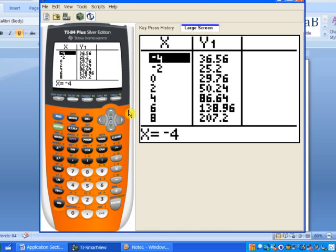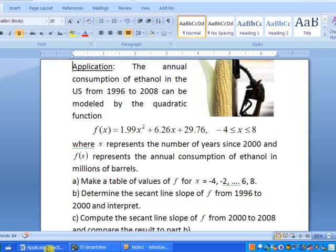It goes from negative 4 to 8 in increments of 2. Remember, x represents the number of years since 2000, so negative 4 represents the year 1996. We'll use those values as we go ahead and start to compute our secant line equations. Let's take a look at part B now.